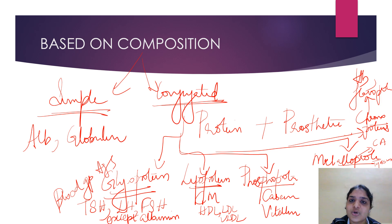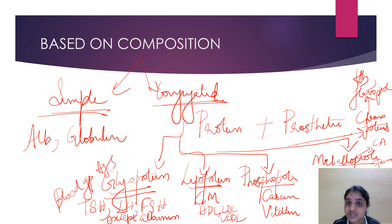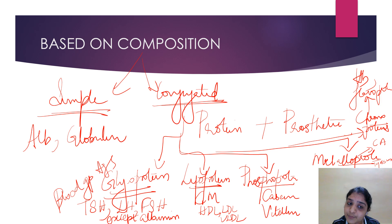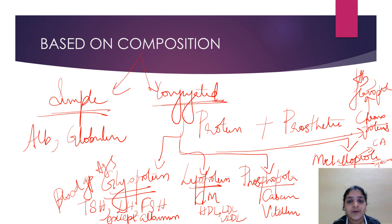So these are the classifications of proteins. First, based on shape: fibrous and globular proteins. Second, based on nutritional value: complete proteins (casein), incomplete proteins (lacking one essential amino acid — pulses lack methionine, cereals lack lysine), and poor proteins (zein from corn, lacking tryptophan and lysine). Third, based on composition: simple proteins and conjugated proteins containing a prosthetic group.